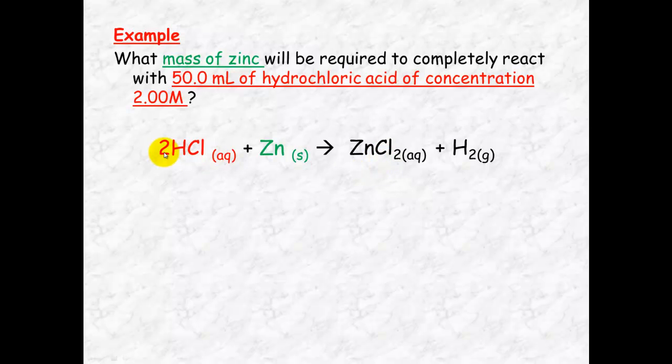This is balanced so we can then move on and write down the information that the question tells us. We know that there's 50 mL of hydrochloric acid. Remember your volume always has to be in liters. And the concentration is 2.00 molar. We're trying to work out and calculate the mass of zinc which will react with this hydrochloric acid.